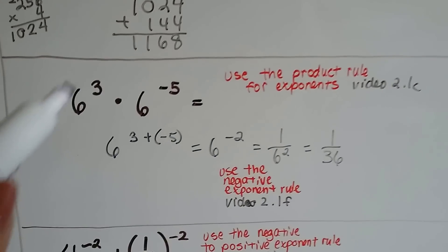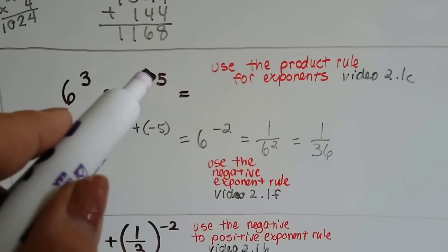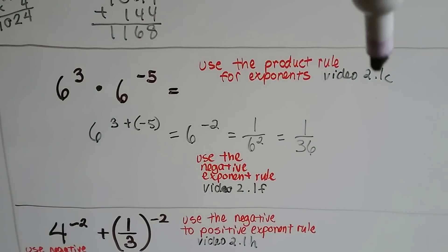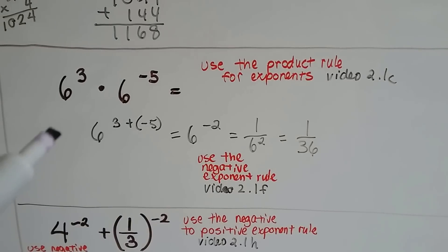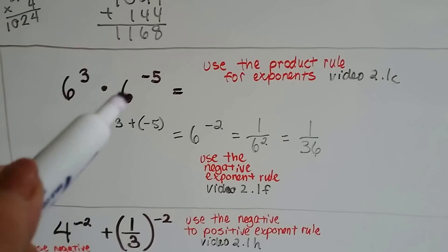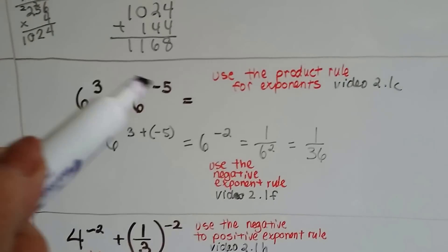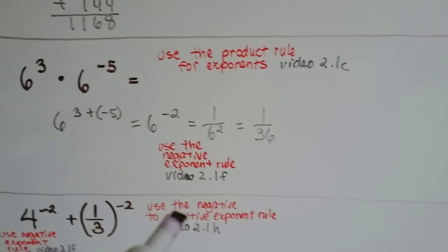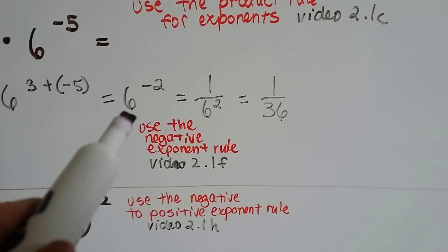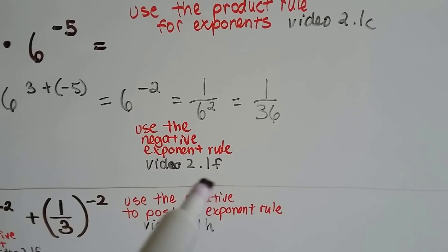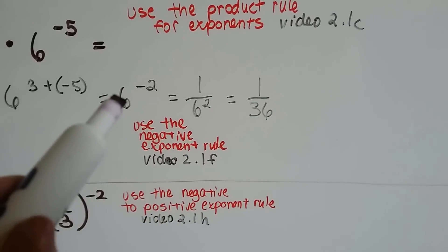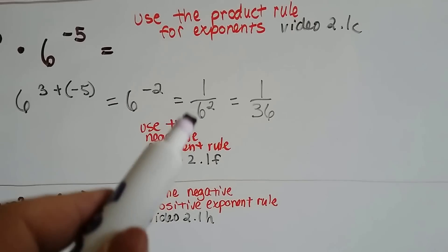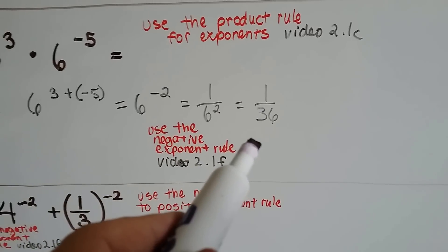Let's try this one. We've got 6 to the 3rd power times 6 to the negative 5, and it needs to be simplified. Well, we can use the product rule for exponents in video 2.1c, and we just add the exponents because we're multiplying like bases. 3 plus negative 5. 3 plus negative 5 is negative 2, and if you saw the video 2.1f, we use the negative exponent rule. This becomes a fraction with a positive exponent. 1 over 6 to the 2nd power, it becomes 1/36.